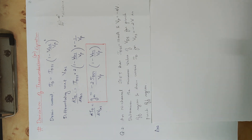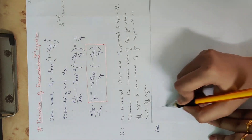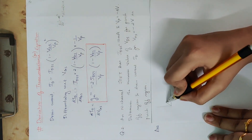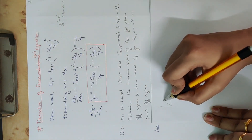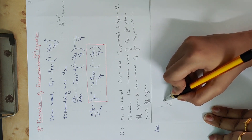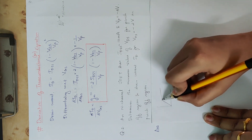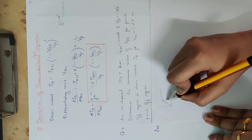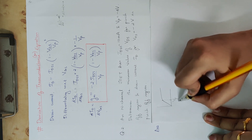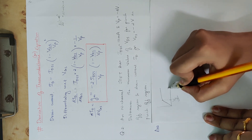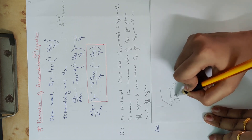Let's look at the drain characteristics of the ohmic region — it is a straight line, linear. Let's look at the point of VDS for the pinch-off region.